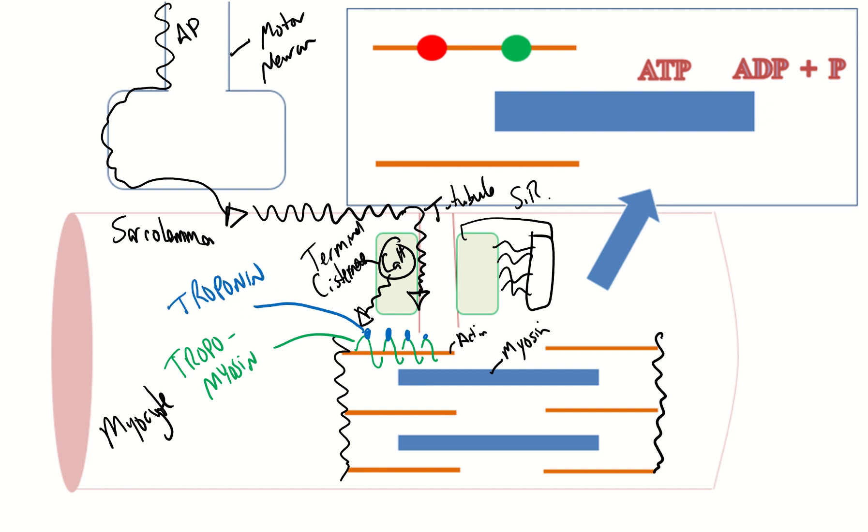Okay so when this calcium is released this calcium is going to interact with this knot or this troponin and you can think of it like the calcium is pulling the knot on the rope and what happens is it's going to cause this tropomyosin to turn and when the tropomyosin turns it's going to expose the myosin binding sites.